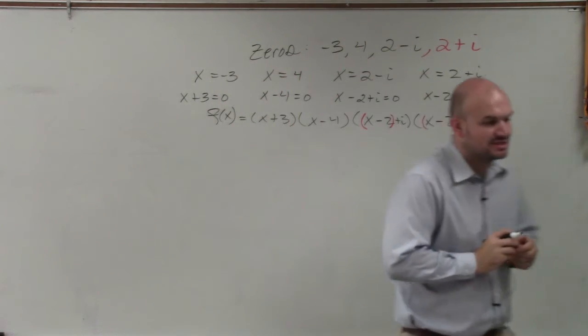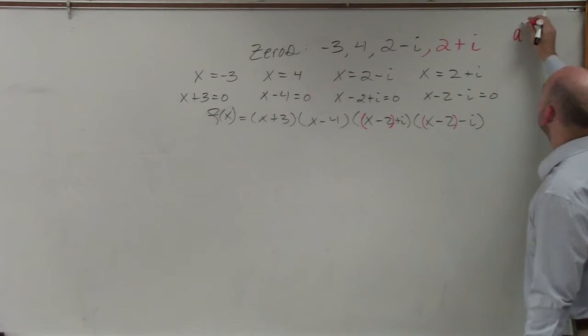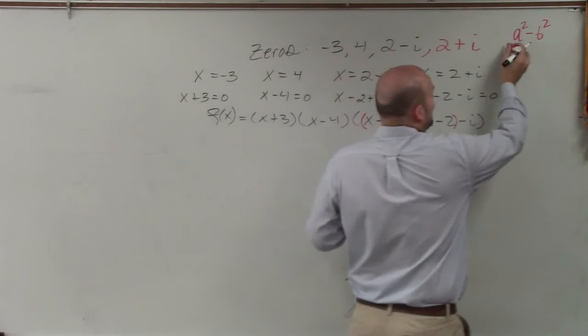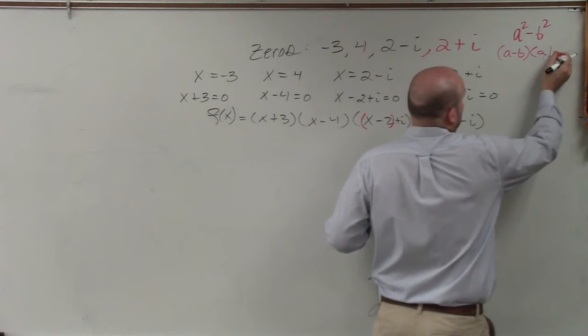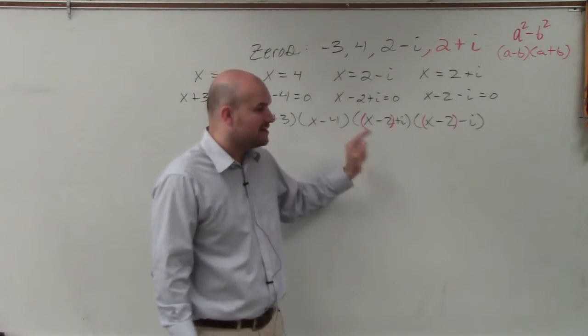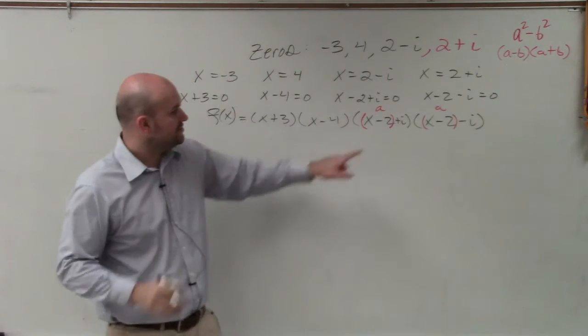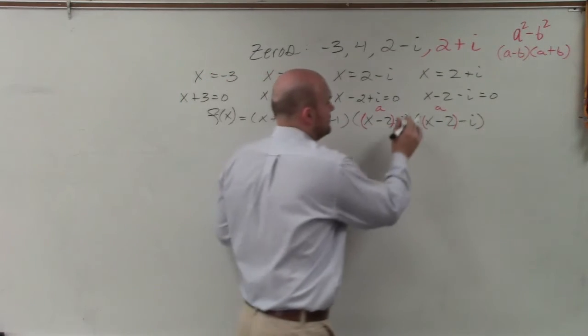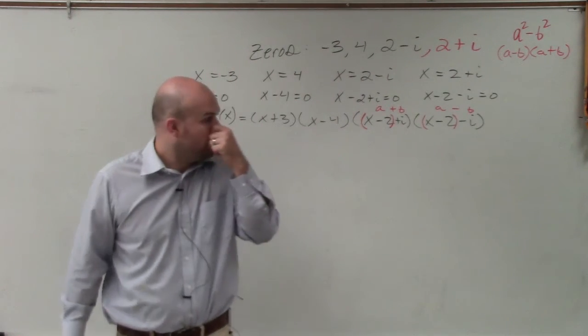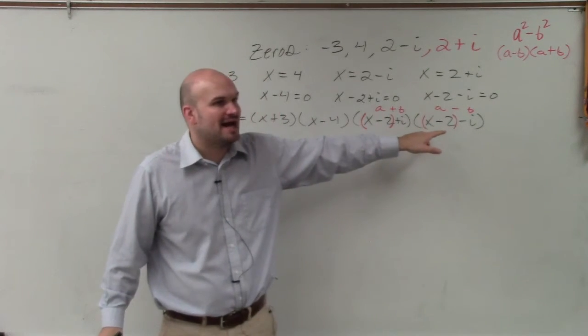Because what the i's produce is a difference of two squares. If you have any expression where the first term is squared minus the second term is squared, that can be factored into (a-b)(a+b). That's the difference of two squares in factored form. Do you see x minus 2 is the same for both? Do you see that i is the same for both? So it's really like (a+b)(a-b), where a is represented by x-2, and b is represented by i.